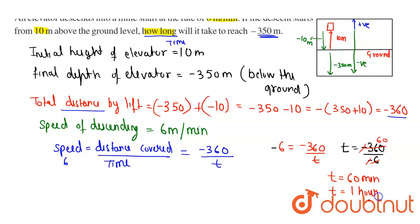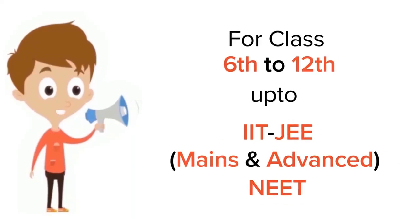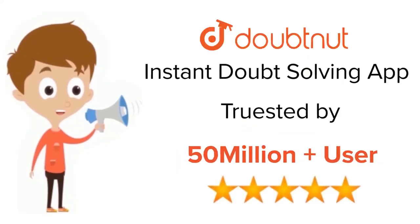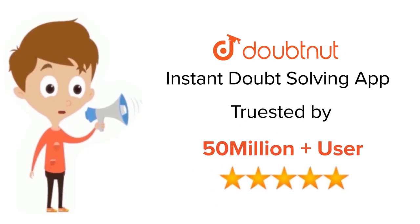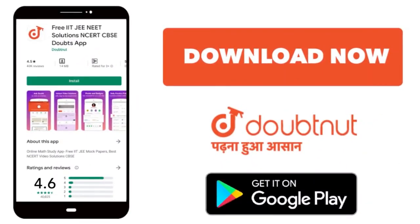So this completes our solution. Here you can see that 60 minutes equals 1 hour, so t equals 1 hour. For class 6 to 12, IIT-JEE and NEET level — trusted by more than 5 crore students — download the DoubtNet app today.